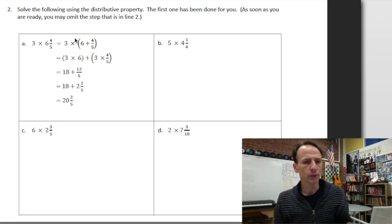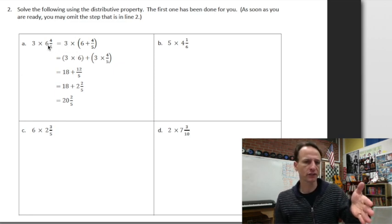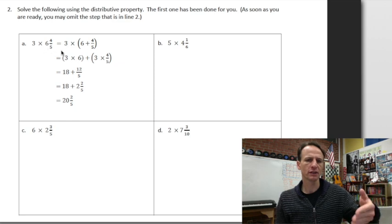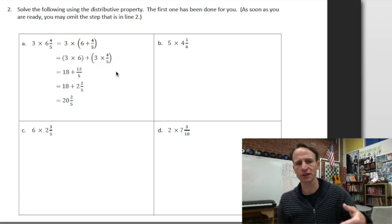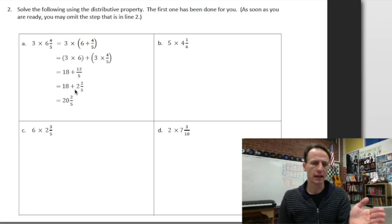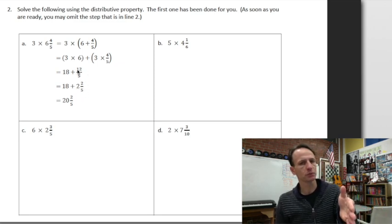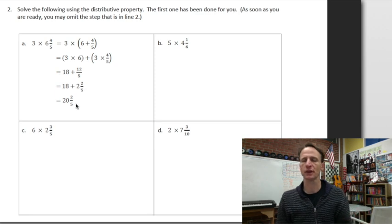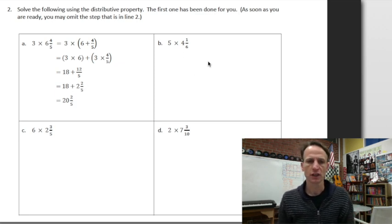Which is what we did in that second equation back there. The first one's done for us, and so as we can start doing some steps in our head as we're able. If you look at what they do, they say hey, three times six and four-fifths, we can distribute that out: three times six, three times four-fifths. Get the two products there, and then we have to convert the improper fraction to a mixed number, then we can come to a final solution.